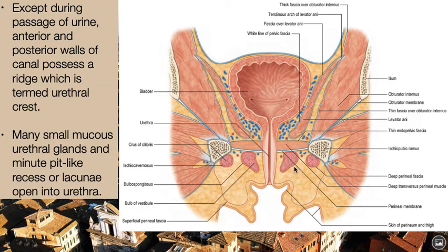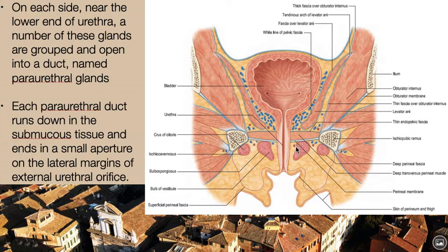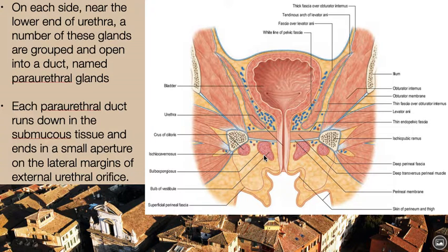Many small mucous urethral glands and minute pit-like glands, recesses, or lacunae open into the urethra. On each side near the lower end of the urethra, a number of these glands are grouped and open into a duct. They are called the para-urethral glands.